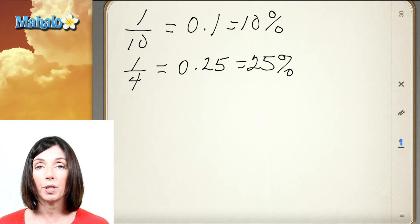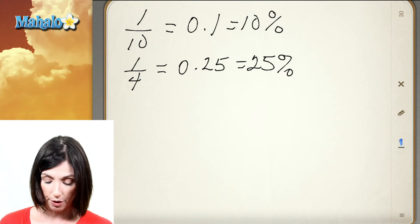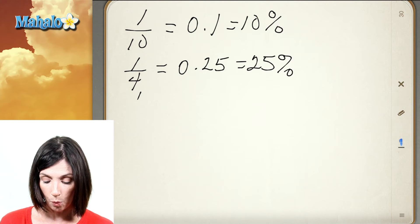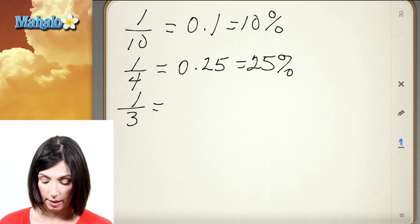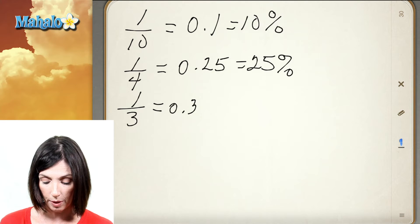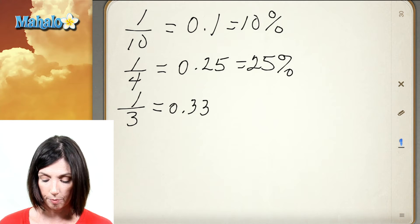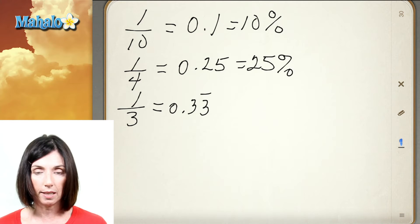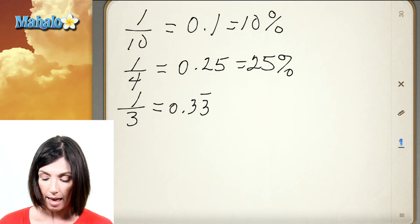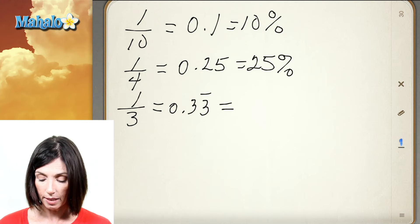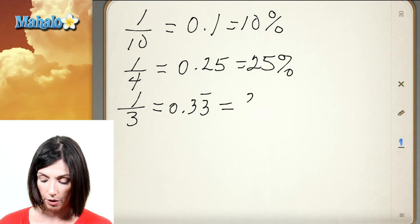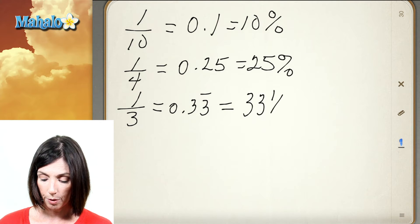Another good one to know is one-third. One-third when you write it as a decimal is 0.33 repeating. The three just repeats infinitely. And as a percentage, that is 33 and one-third percent.